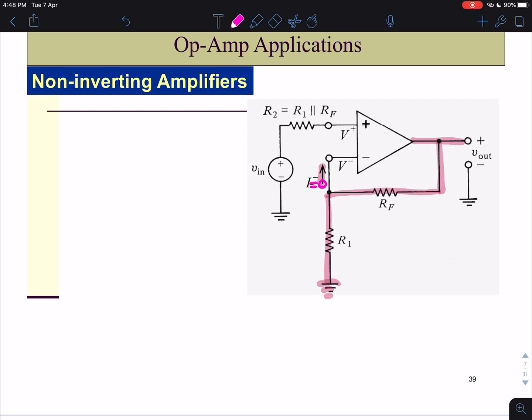We can draw it something like this. We have V out here and then we have RF and then we have R1. This is the ground. So R1, RF and then this is basically V minus.